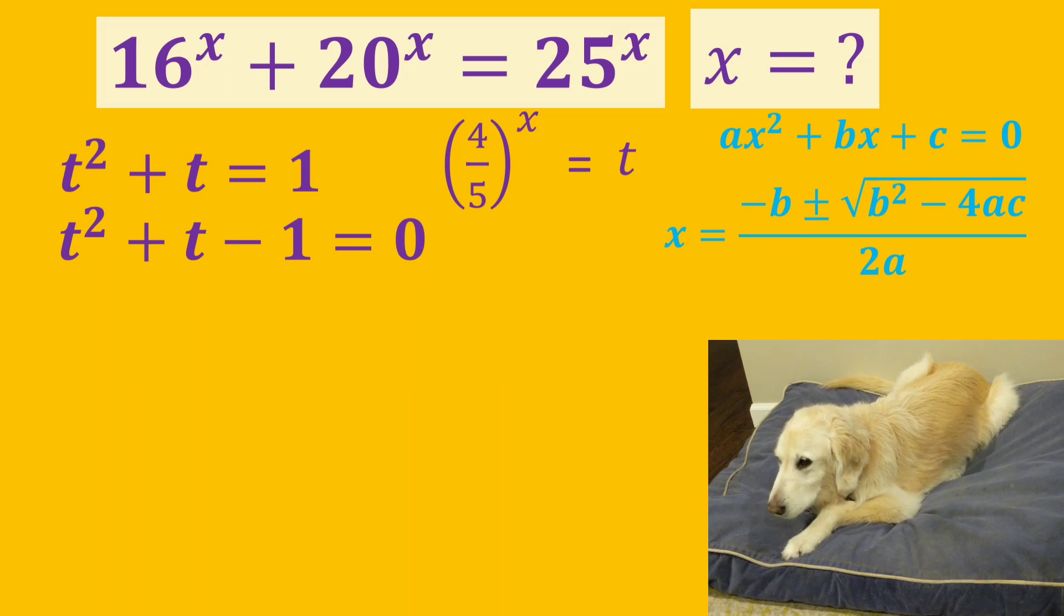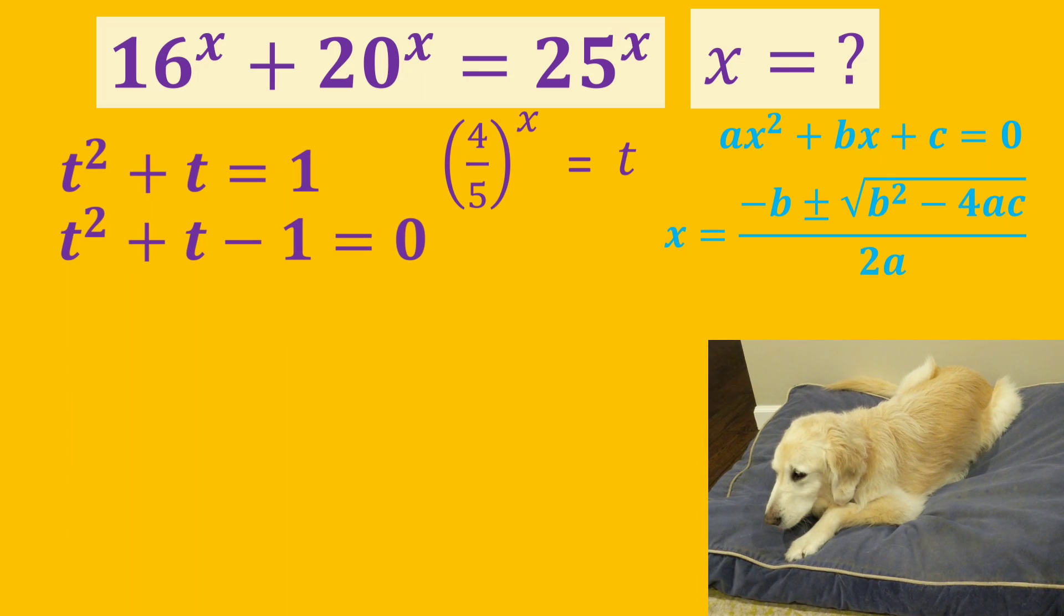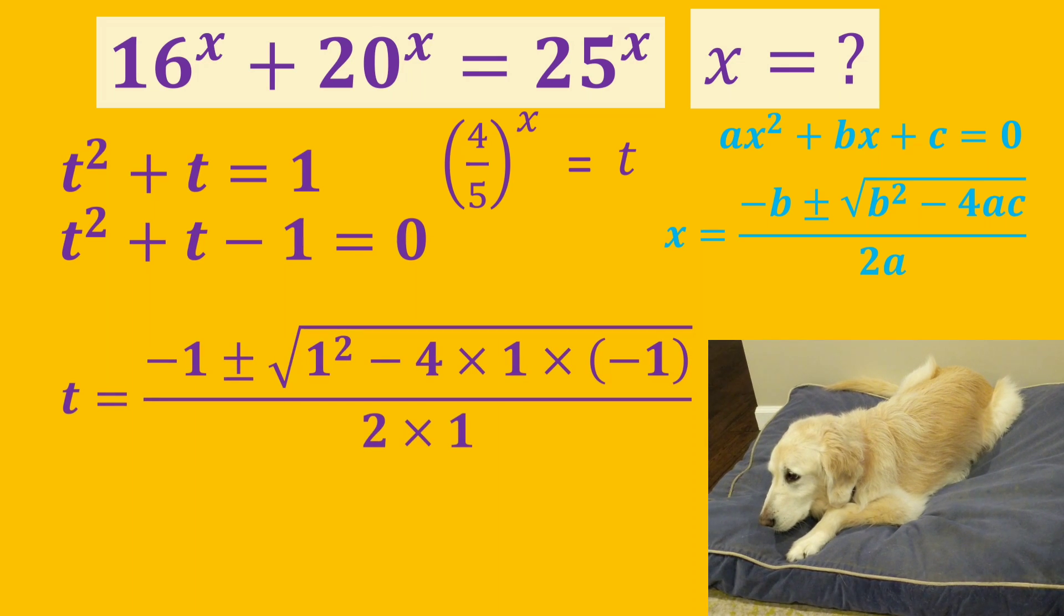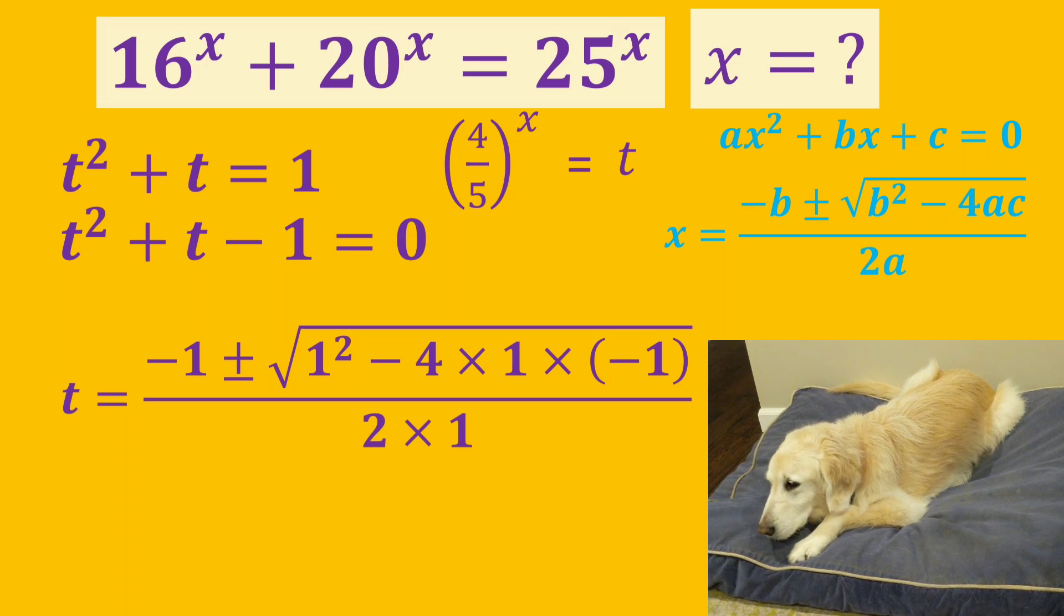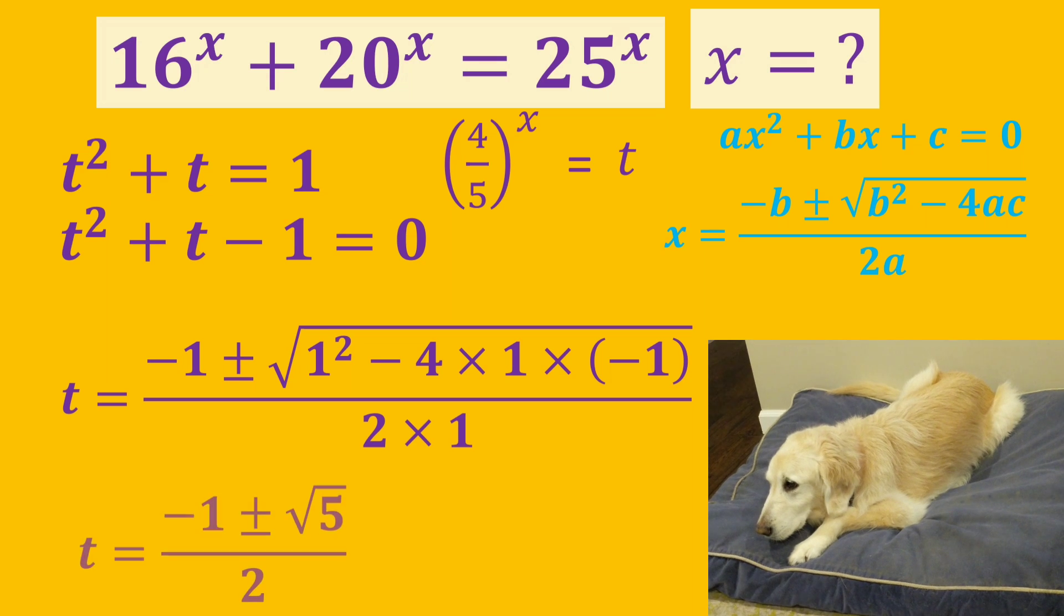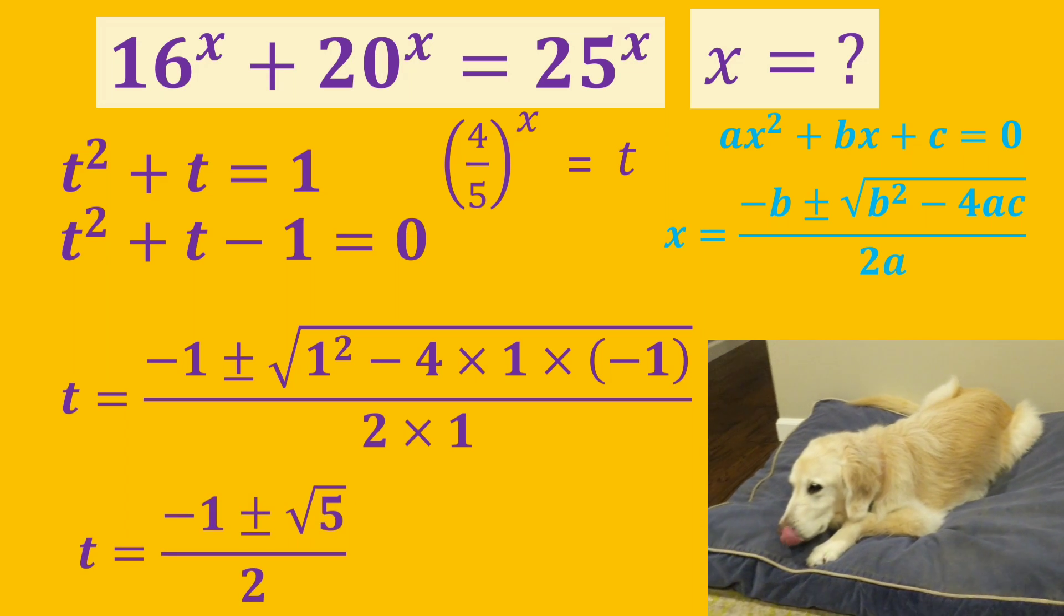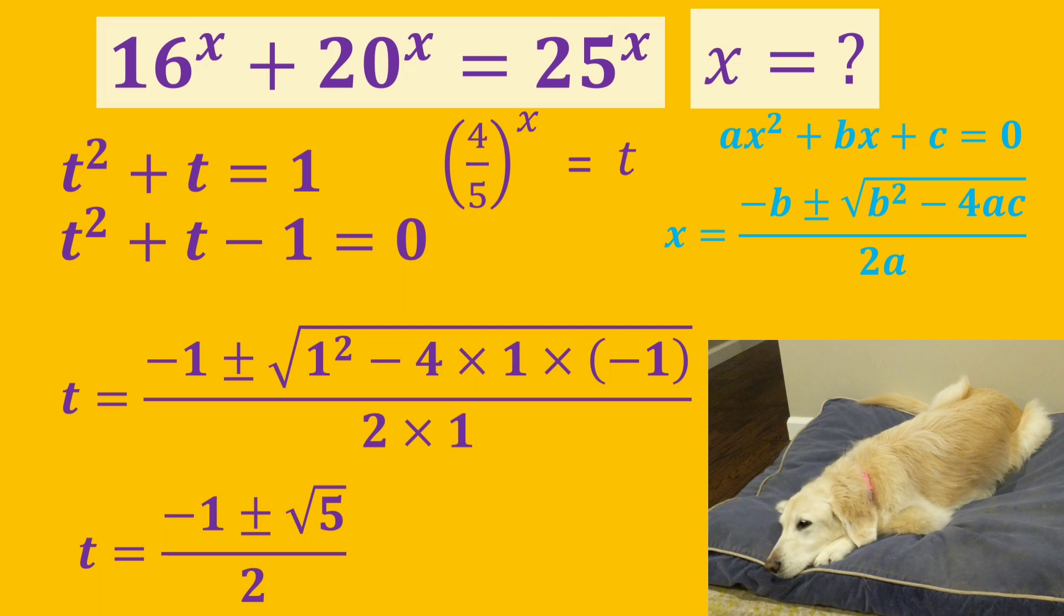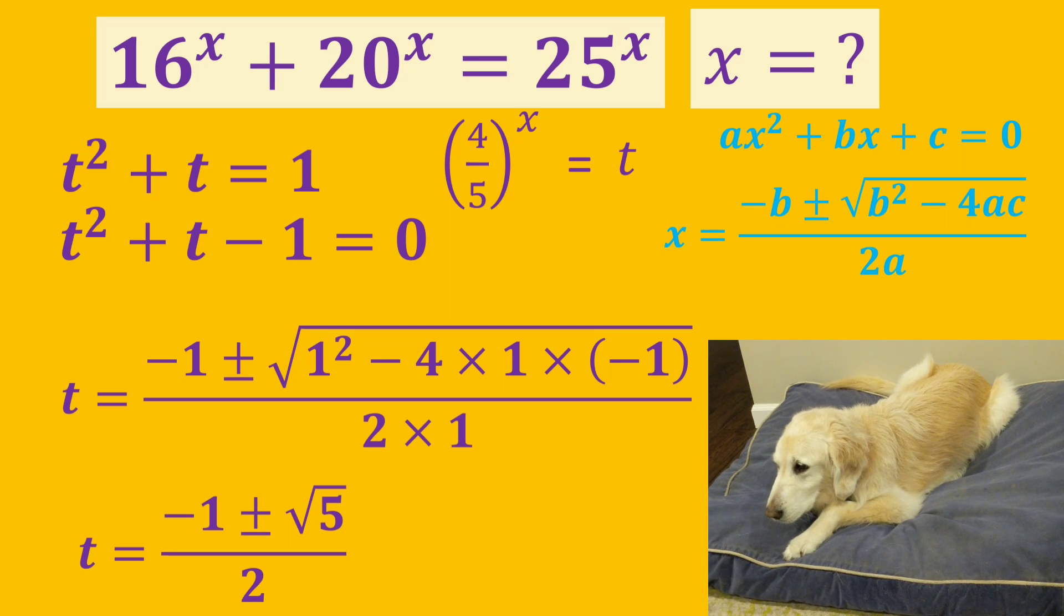To do that, we need the quadratic formula. Based on the quadratic formula, we will find 2 possible values of t. So, t is equal to minus 1 plus or minus square root of 5 all over 2.